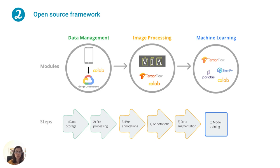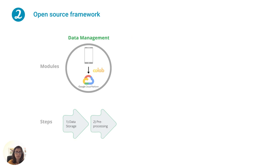Our framework is divided in three main models and six steps. The first model, data management, consists of two steps: one for data storage, where remote servers and providers such as Google Cloud Platform or Amazon Web Services can be used, and the second step, the pre-processing, is the sensitive data filtering.